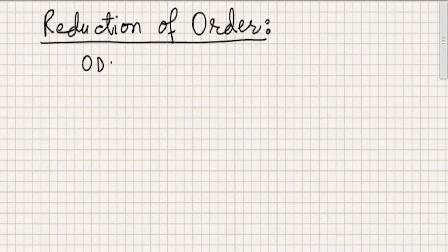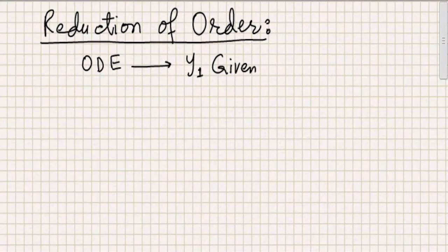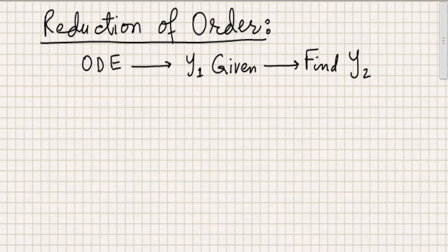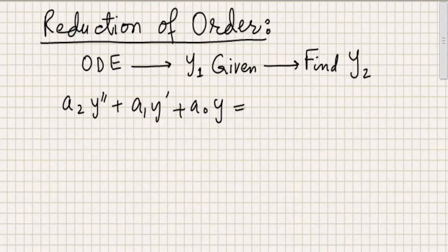So for example, if there was a differential equation — any differential equation — and there was a solution y1 which was available to us, given to us, and we're required to find the second solution to this differential equation, this method will allow us to do that. So first let's see how to formulate this method. The first thing is that you write the differential equation in the standard format: a2·y'' plus a1·y' plus a0·y equals zero.